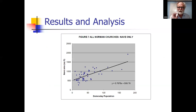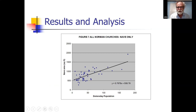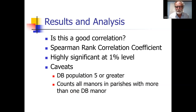So what does this actually look like in practice? This is my analysis for Norman churches in Wiltshire. Along the X-axis we have the Domesday population of the parish as given by numbers of heads of household, and up the side the area of the parish church nave. You've got a set of dots — all the data points — and the computer has drawn a line through them. But is this a real line or just a random scatter? That's where the statistical test comes in. Do we get a correlation? Yes — we get a very highly significant correlation at the 1% level, which is the highest degree of correlation you can get. That's very encouraging.